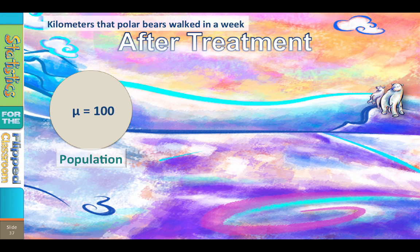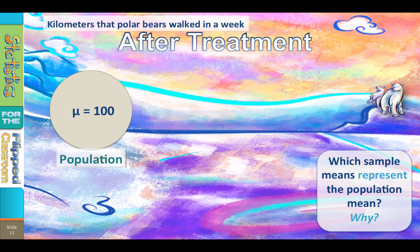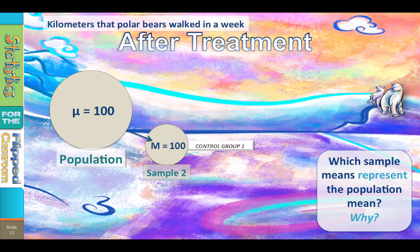After treatment, we measure each of our samples again. We want to know which sample means represent the population mean of 100 and why. Let's start with our control groups. The sample mean for control group one is 100. Does that sample mean represent the population mean? Yes, it is exactly the same as the population mean, so it represents the population mean quite well. In fact, we couldn't ask for better.